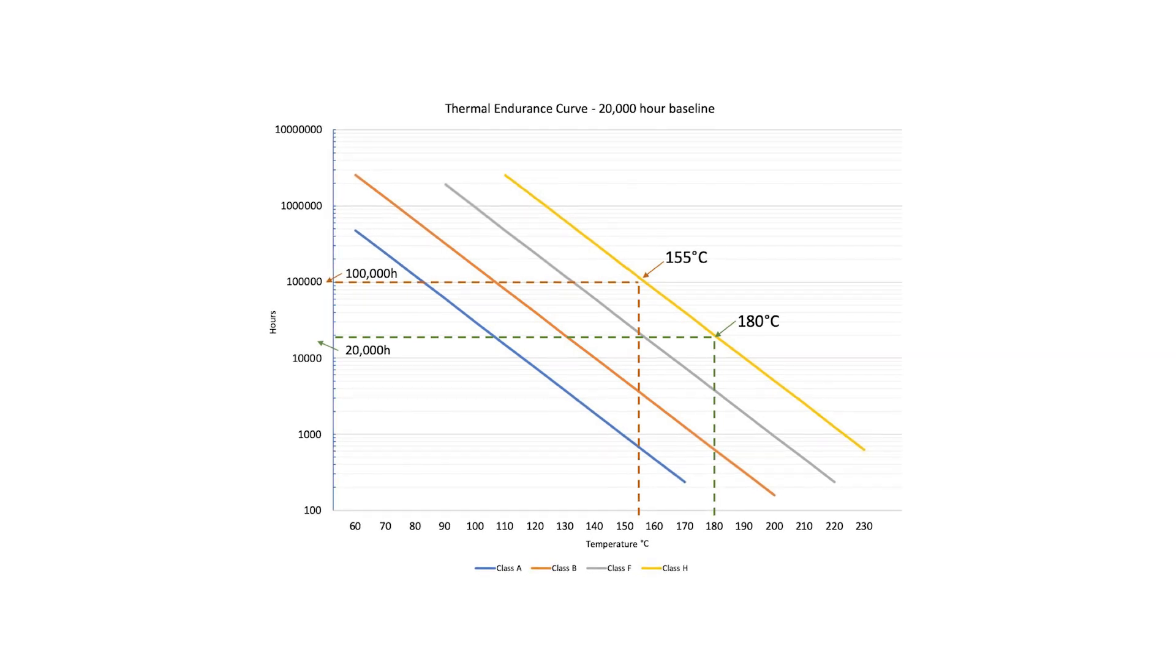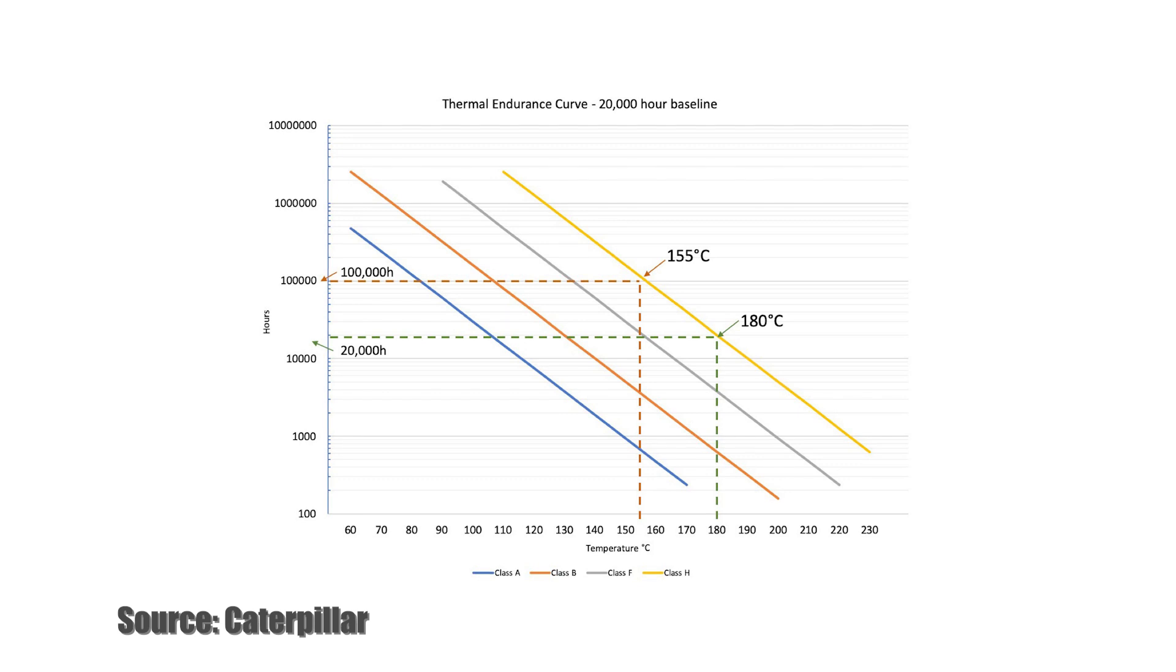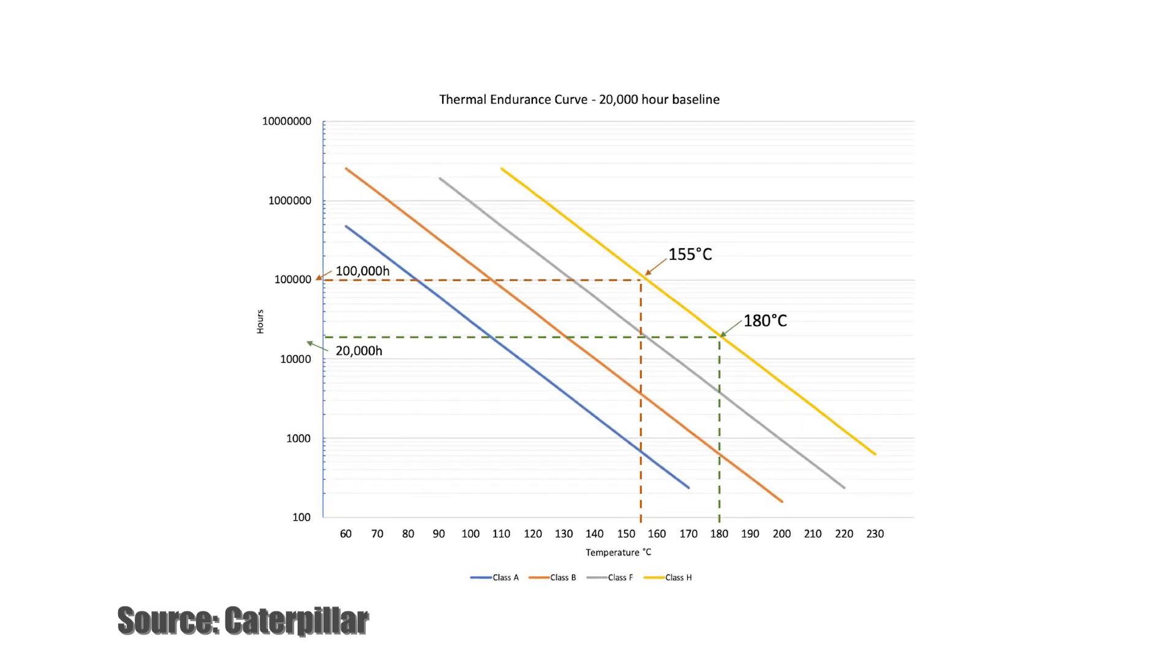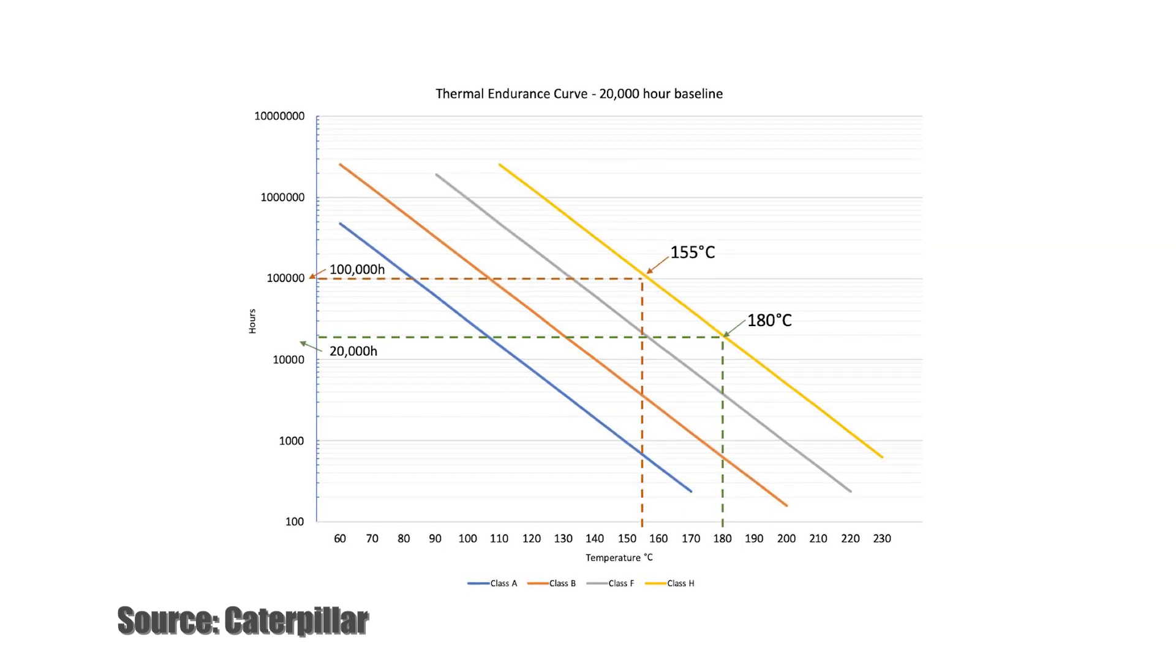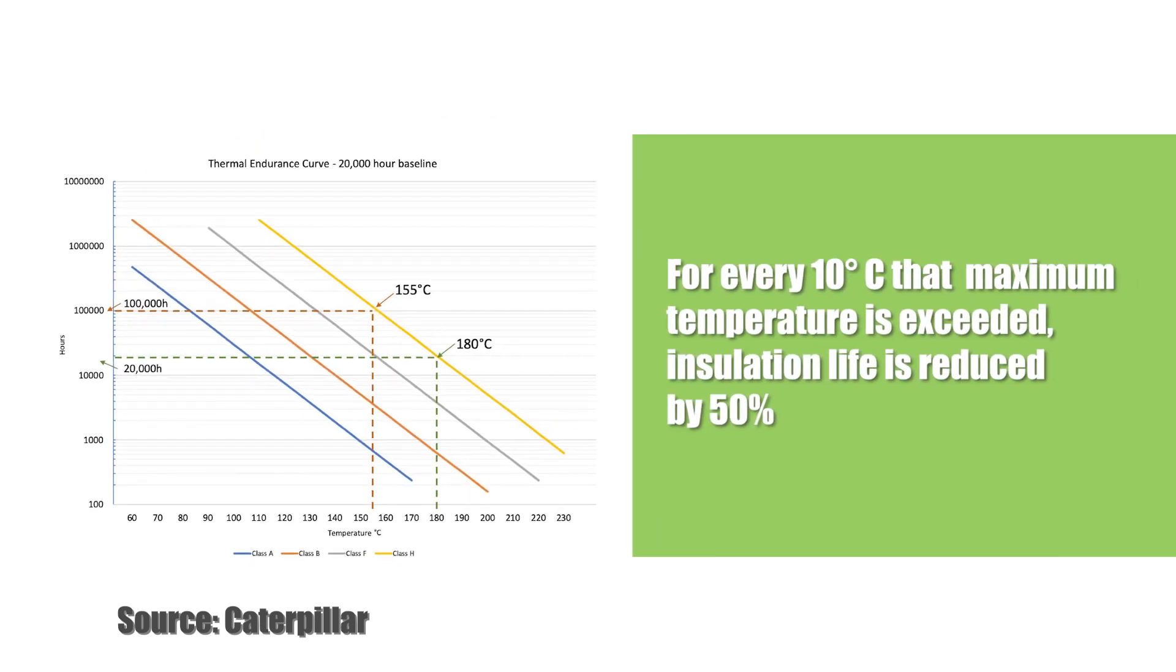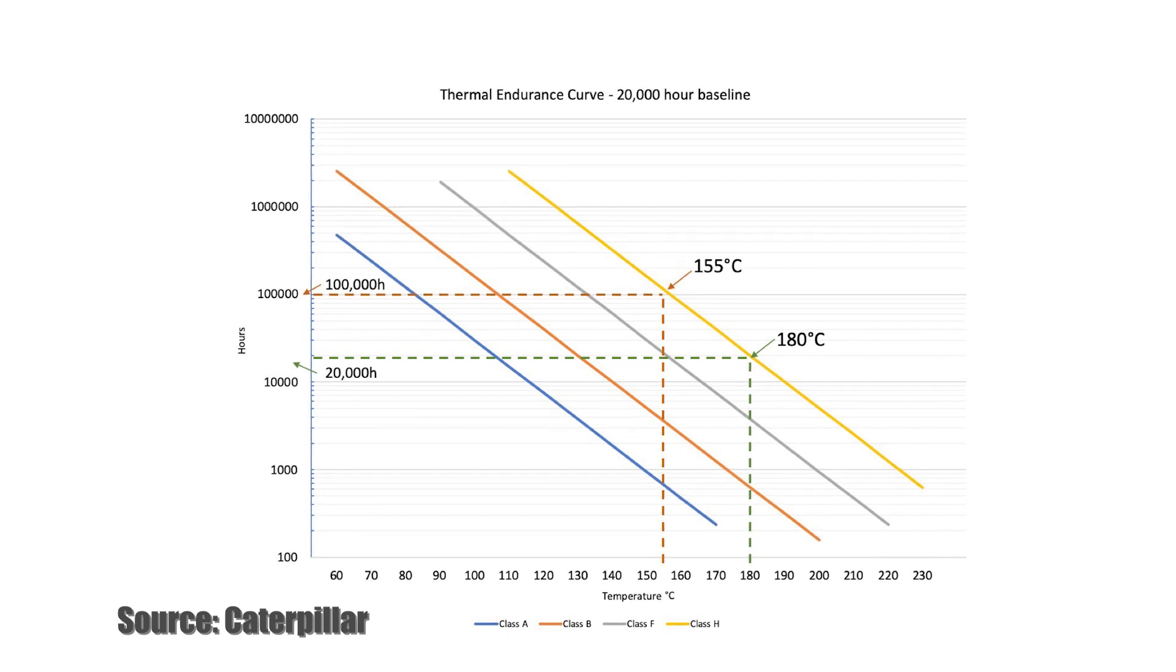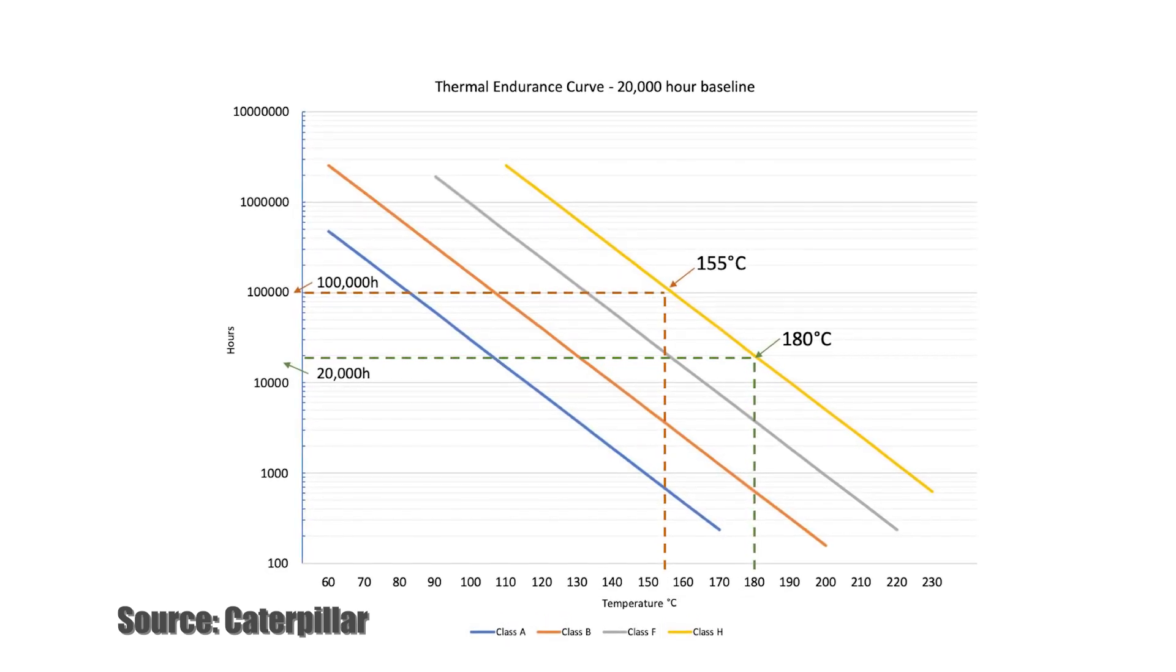The maximum temperature specified by the insulation class will provide an insulation life of 20,000 hours, with the motor operating at full load. According to the Arrhenius equation, which explains that chemical reactions occur more rapidly at higher temperatures, for every 10 degrees C that the maximum temperature is exceeded, the insulation life will be reduced by 50%. Conversely, for every 10 degrees C that the motor is operated below the maximum temperature, the insulation life will be doubled.